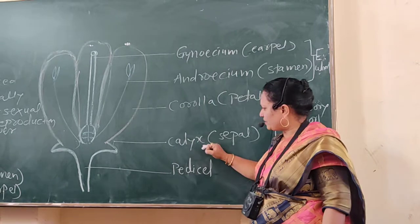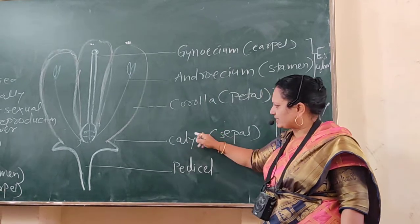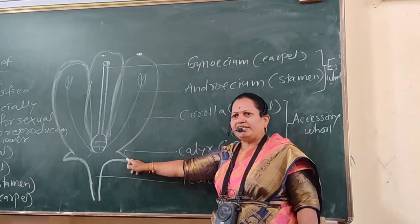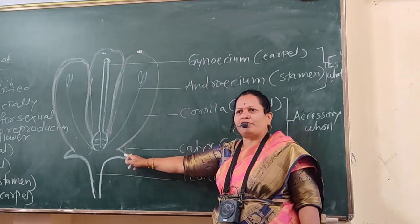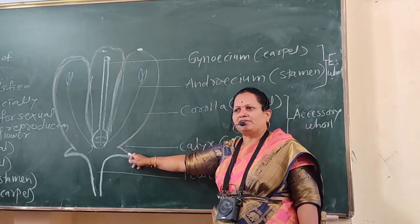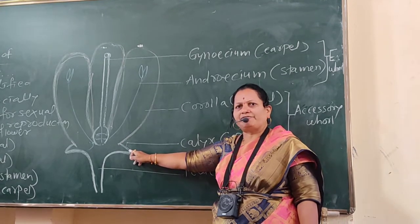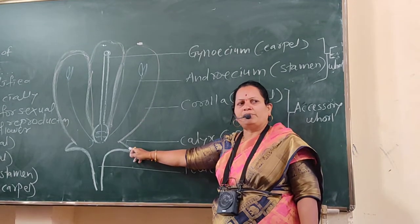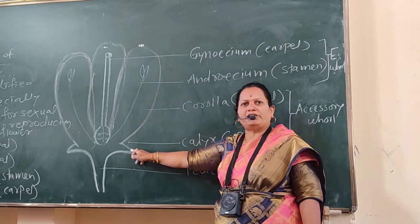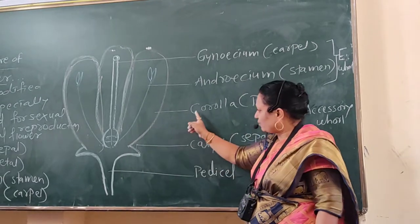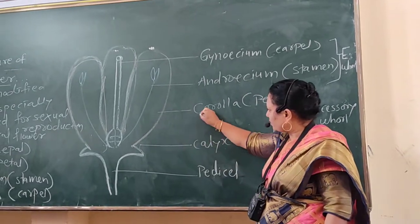What is the function of calyx? It is green in color. Therefore, one function is photosynthesis, and the second function is protection of the inner parts of the flower in the bud condition.